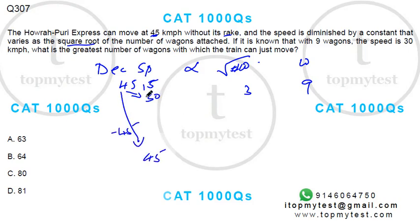Now, to reduce 15, which is proportional to 3, 15 works with 3. So, 45 will work with, this is 3 times, so this should also be 3 times, 9.